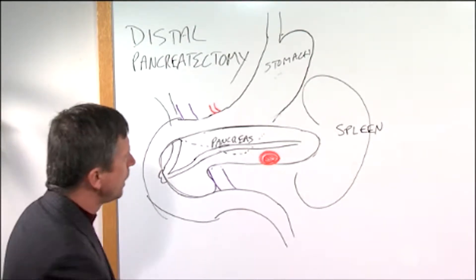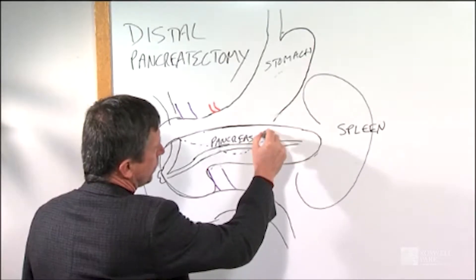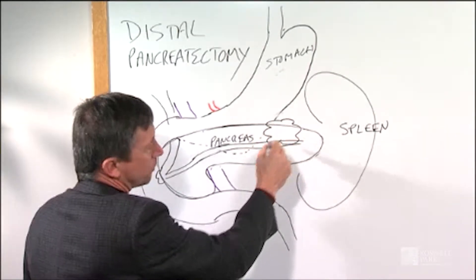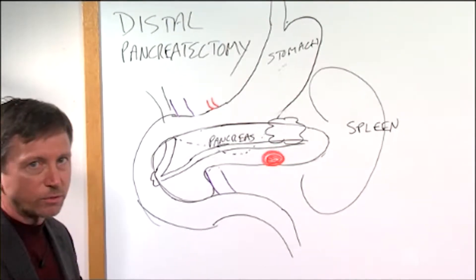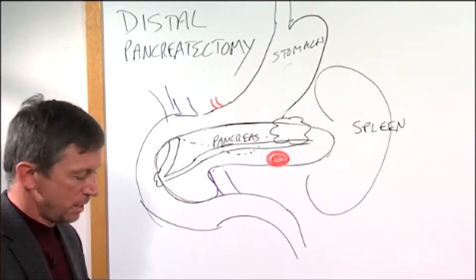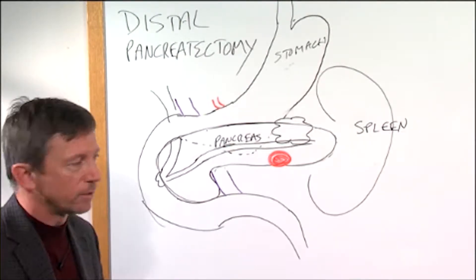The other common thing that we see are cysts of the pancreas where you have a fluid-filled or mucus-filled cyst. These cysts can be either precancerous or cancerous, and that's another common indication for removing the tail of the pancreas.